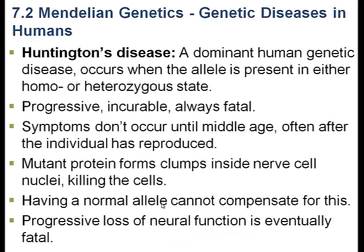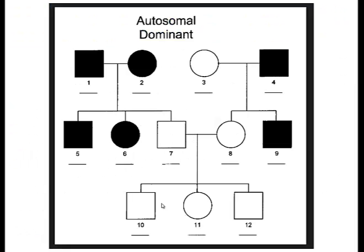We want to talk about another genetic disorder referred to as Huntington's disease. Huntington's disease is especially devastating because it is a dominant genetic disorder. Looking at the pedigree shown here, you don't have to have both parents carrying the gene for this disorder, because it's dominant — as long as you have one affected allele, the offspring have this disorder. Almost always, individuals with Huntington's disease will be heterozygous, so there's a 50% chance the affected individual will pass the gene on to offspring.